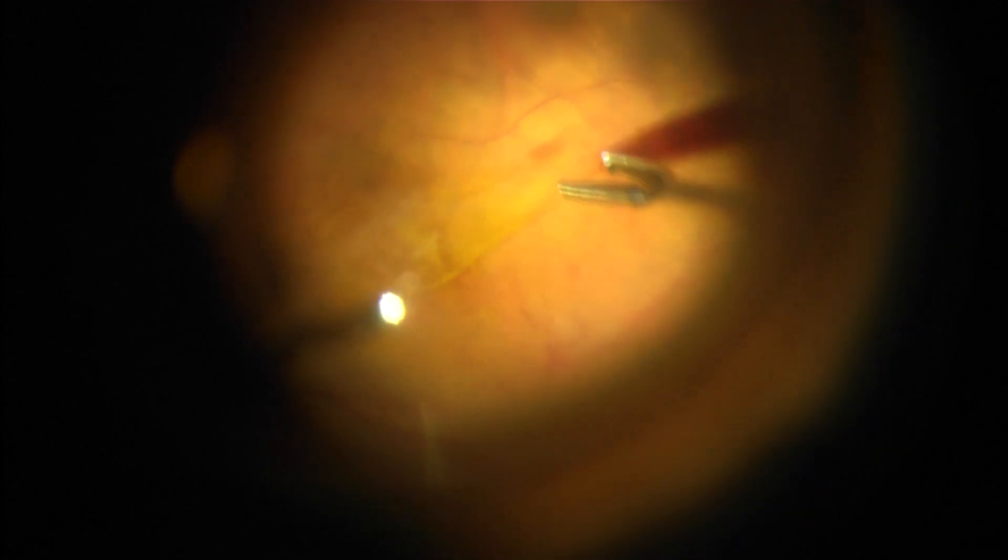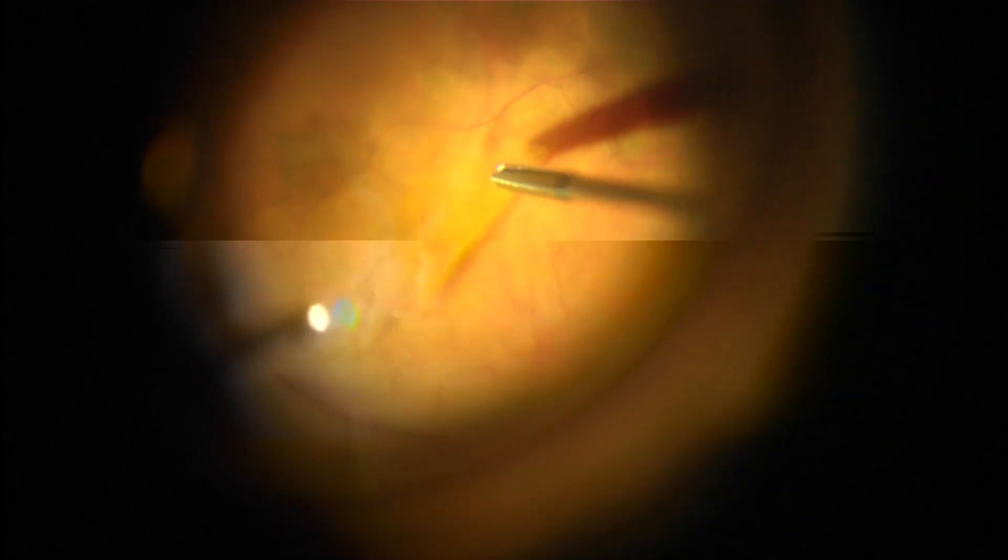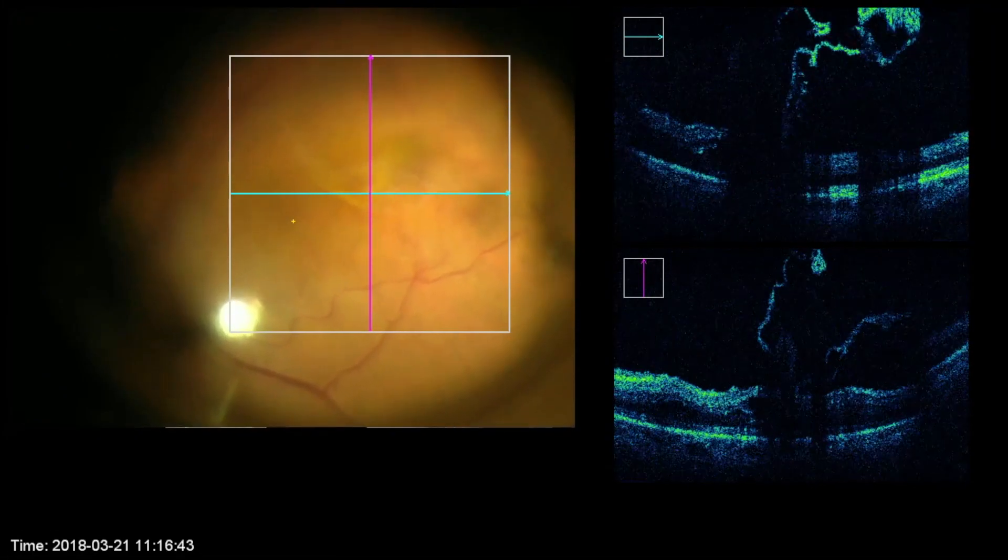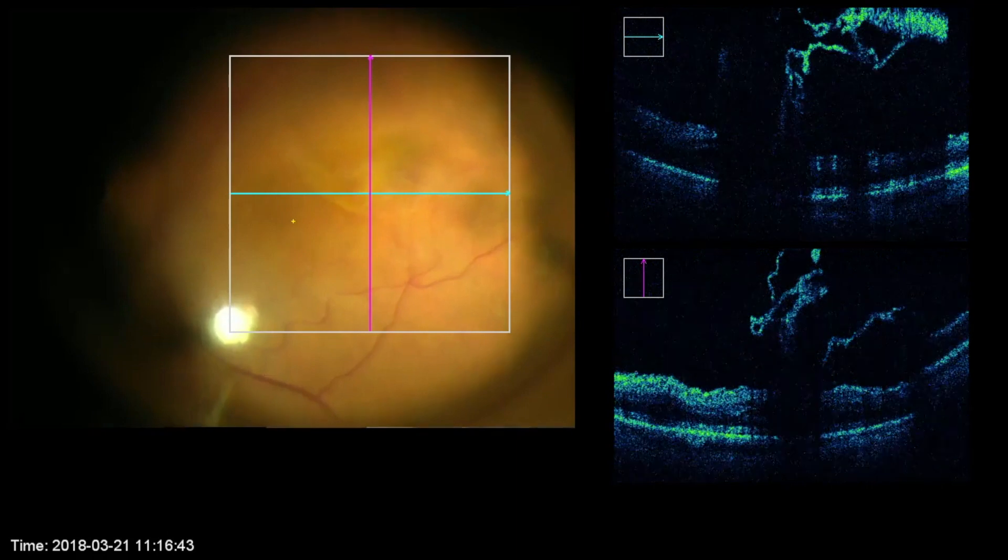Here is all the membranes peeled off but still attached to the fovea. This is the intraoperative appearance of the peeled membranes hanging on to the fovea. Then these membranes were trimmed off with the cutter using low suction.